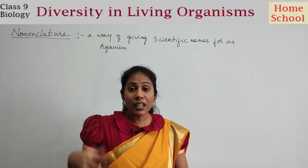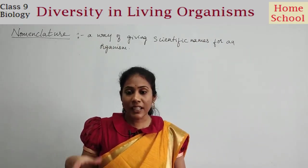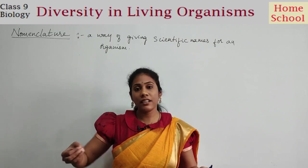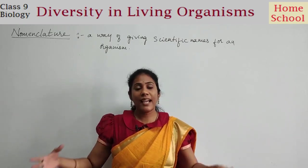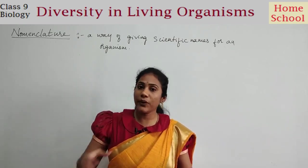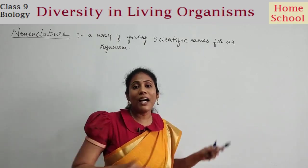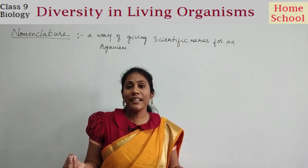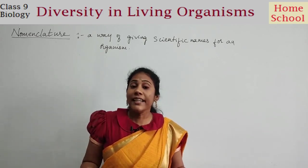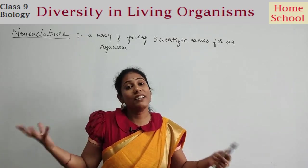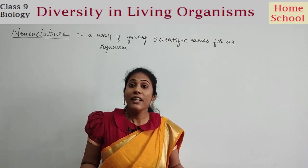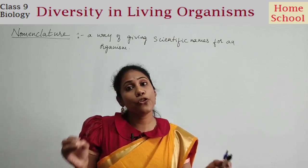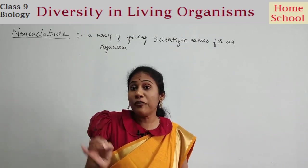For example, take tiger. In India, tiger is called with different names. In Hindi we call it differently, and in various other languages tiger has a different name. If you go to other parts of the world, tiger may have yet another name. Ultimately, a person gets confused. It would be better if tiger had one common name. That is the main aim of giving scientific names — to avoid confusion.